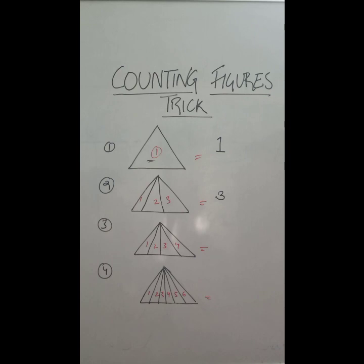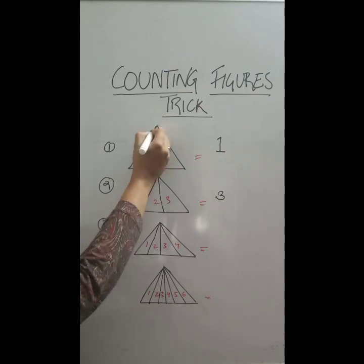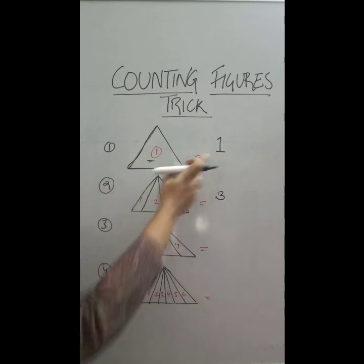Well, this is another trick which we are going to use mostly in competitive examinations. You may get a question similar to this: count the total number of figures. There's a very easy trick for it. If I see the first triangle, if I ask you to tell me the number of triangles, it's naturally one.